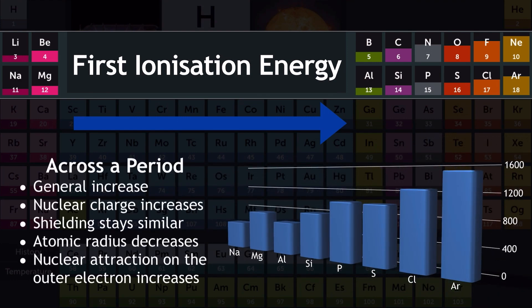The reason for that general increase is threefold. First, nuclear charge is increasing — as we move from sodium across to argon, the number of protons in the nucleus increases. Shielding by inner shells of electrons stays similar. However, atomic radius is decreasing. The consequence of all of these is that nuclear attraction on the outer electrons is increasing, which is why first ionization energy generally increases across period 3.